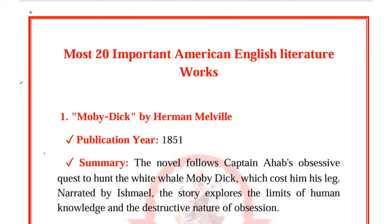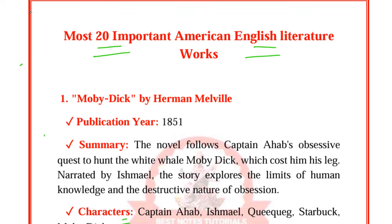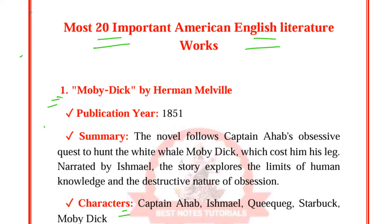Hello everyone, welcome back to Westernos Tutorial. Today we are going to do 20 Important Works of American English Literature. We are going to cover the title, writer, publication date, short summary, and important characters. You are going to be asked questions from these four areas — either the book, the writer, the publication date, or important characters and events.